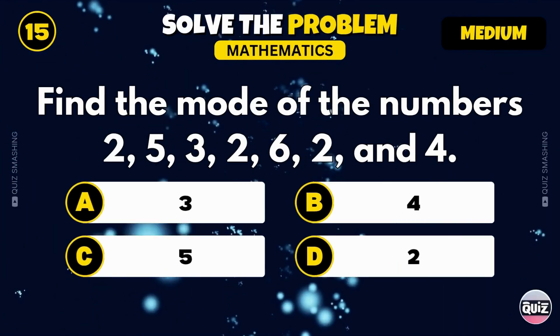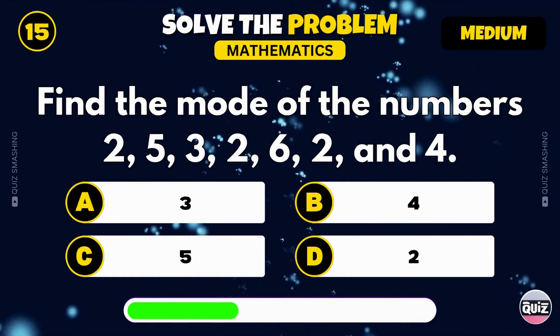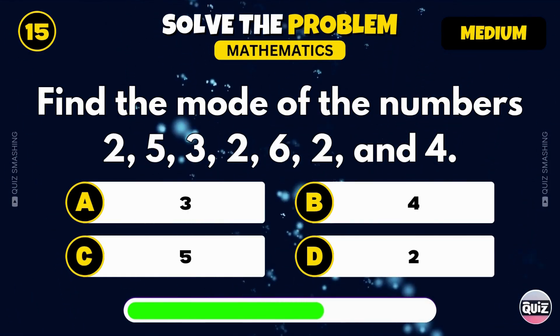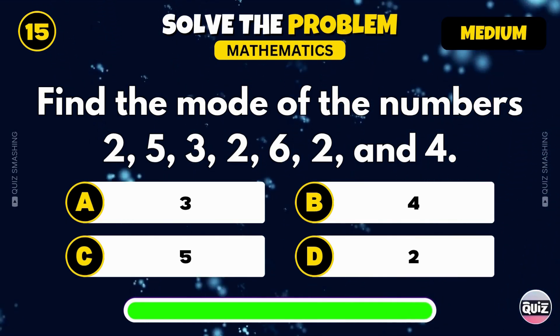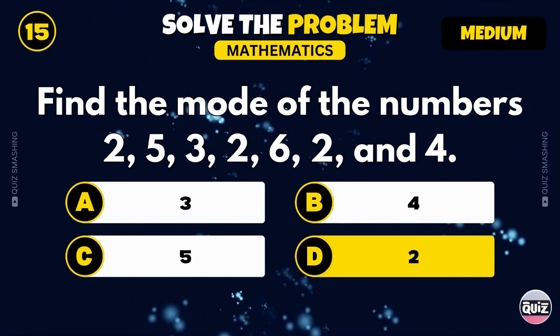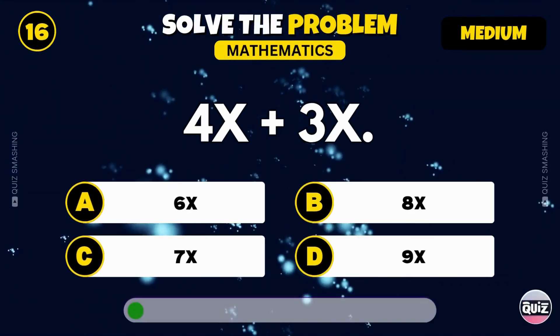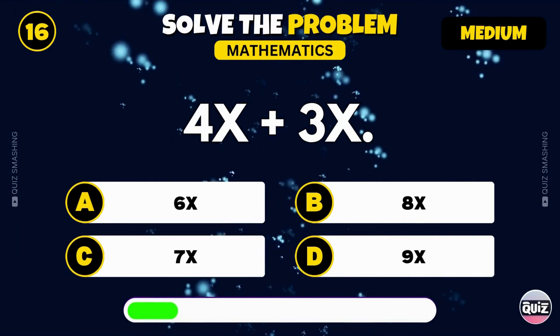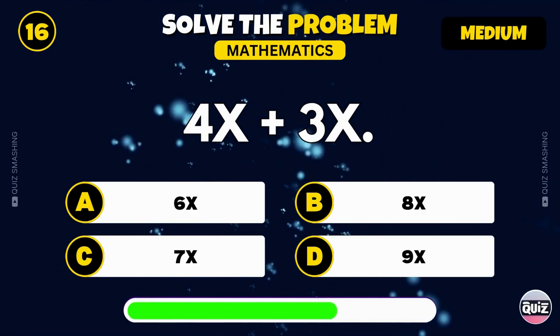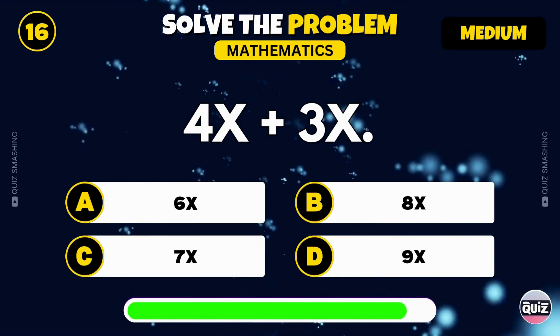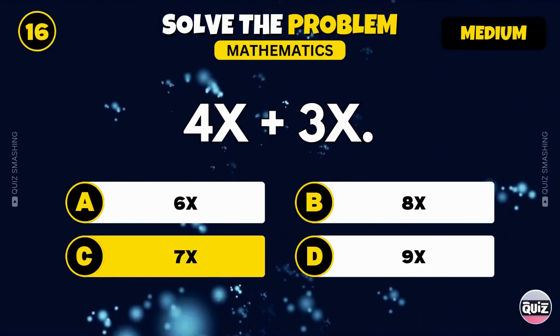Find the mode of these numbers: 2, 5, 3, 2, 6, 2, and 4. Great, the mode is 2. Simplify 4x plus 3x. That becomes 7x.